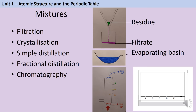The first separation technique is filtration, used to separate an insoluble solid from a liquid. You use a piece of filter paper inside a funnel; when you pour the mixture in, the insoluble solid can't dissolve and can't pass through, so it's left on top as a residue, while the liquid passes through as the filtrate. If you have a soluble substance like salt or copper sulfate, filtration won't work because it would pass straight through the filter paper with the liquid.